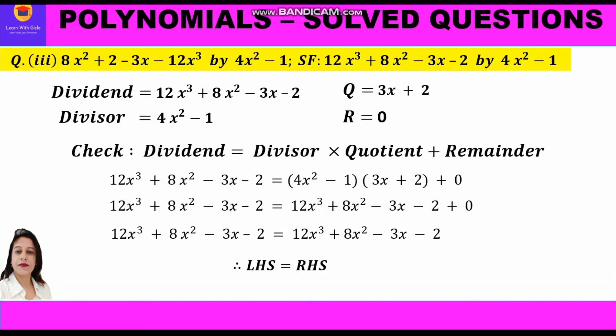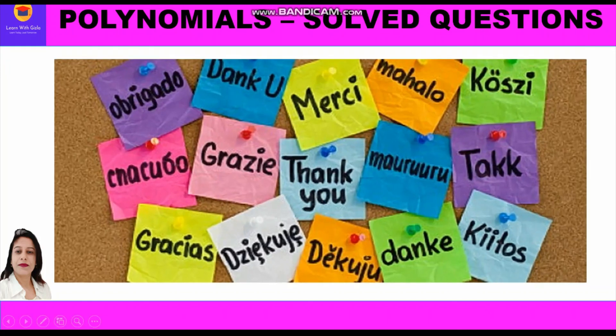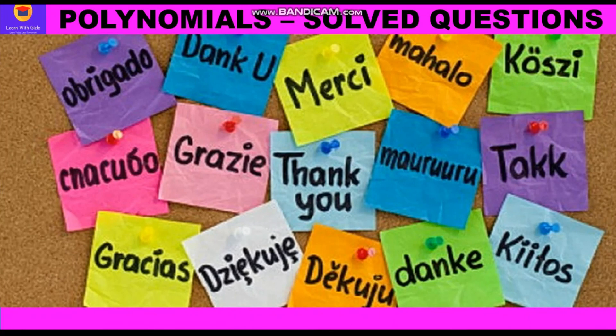And 12x³ plus 8x² minus 3x minus 2 is the left hand side dividend as well, so both sides are the same. Our division algorithm is satisfied and our answer is correct. Hope you have understood dividing a polynomial by a binomial using the long division method. Please like and subscribe and leave your comments. Thank you everyone.